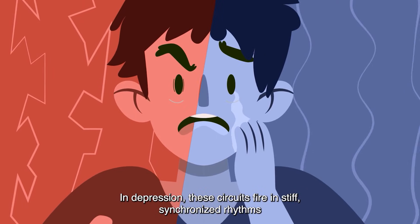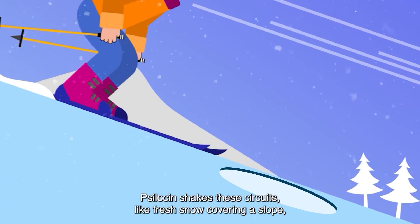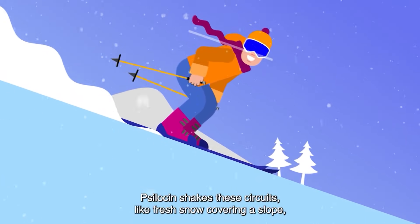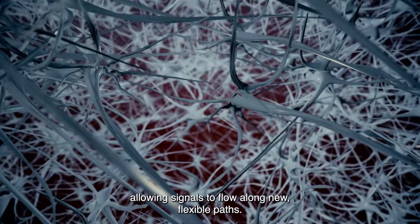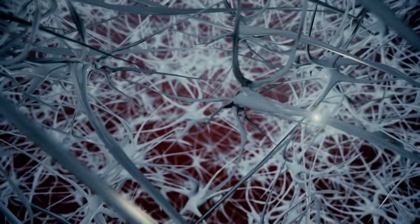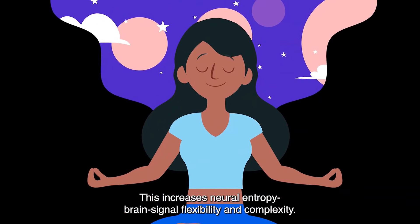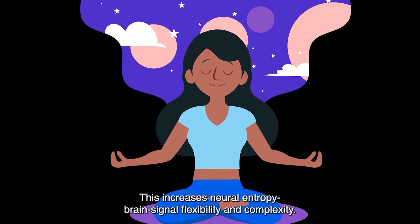In depression, these circuits fire in stiff, synchronized rhythms. Psilocin shakes these circuits like fresh snow covering a slope, allowing signals to flow along new paths. This increases neural entropy, a measure of brain signal flexibility and complexity.